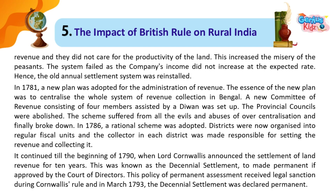Hence, the old annual settlement system was reinstalled. In 1781, a new plan was adopted for the administration of revenue. The essence of the new plan was to centralize the whole system of revenue collection in Bengal. A new committee of revenue consisting of four members assisted by a diwan was set up.